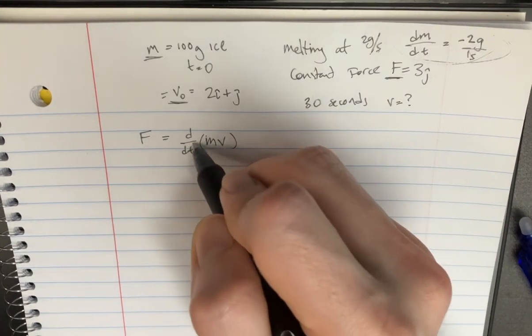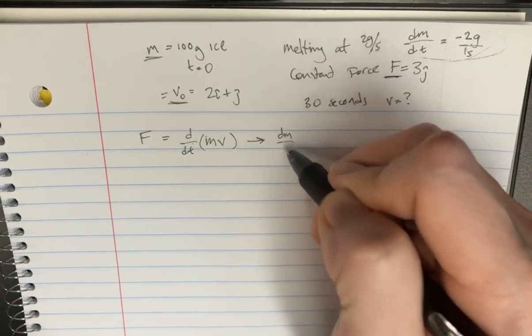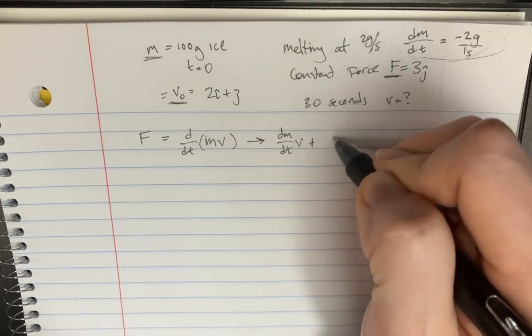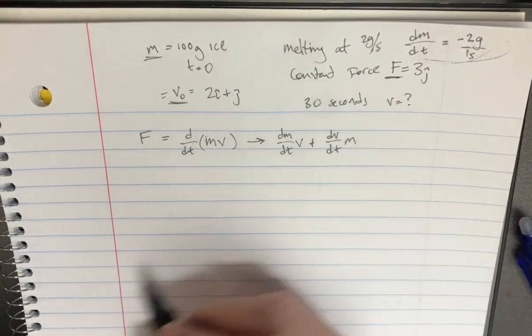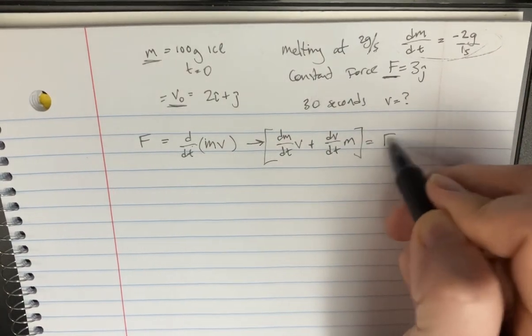And now we can use the rule that we know for the derivatives: dm over dt times v plus dv over dt times m. I think that's just the product rule, right? And then here it's supposed to be equal to f.